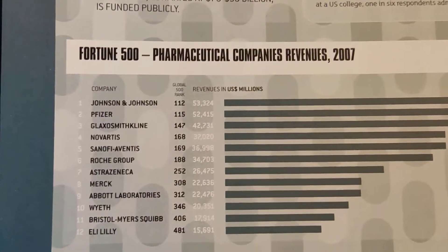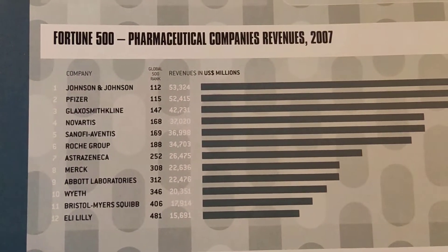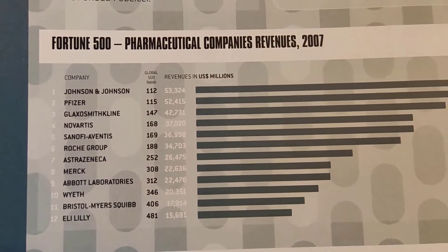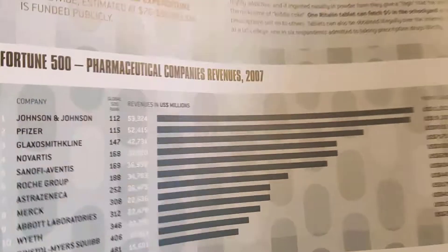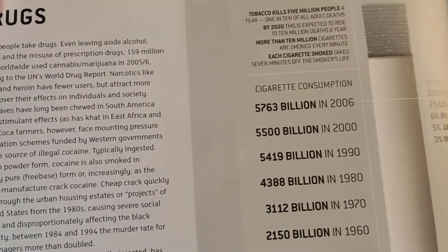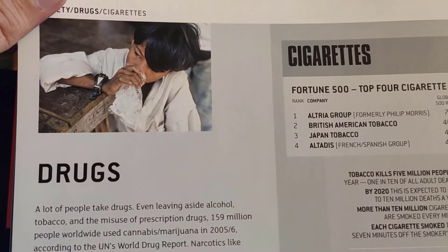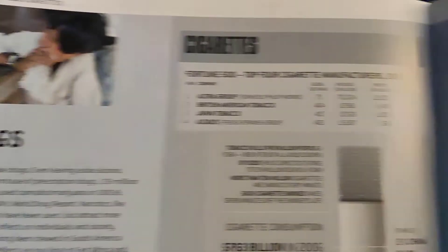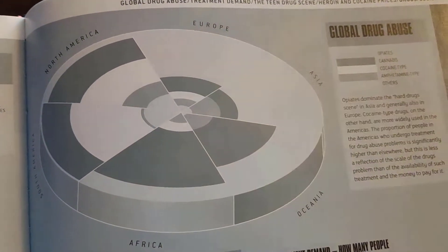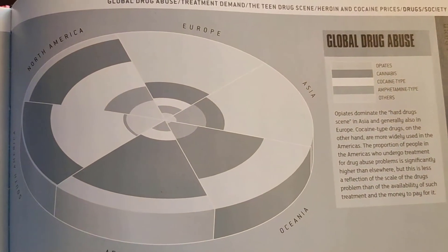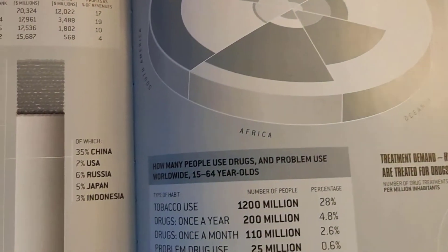It also gives you Fortune 500 pharmaceutical companies' revenues in 2007 — Johnson & Johnson, Pfizer. This section covers the topic of drugs and cigarettes, and there's a pie chart on the topic of global drug abuse.